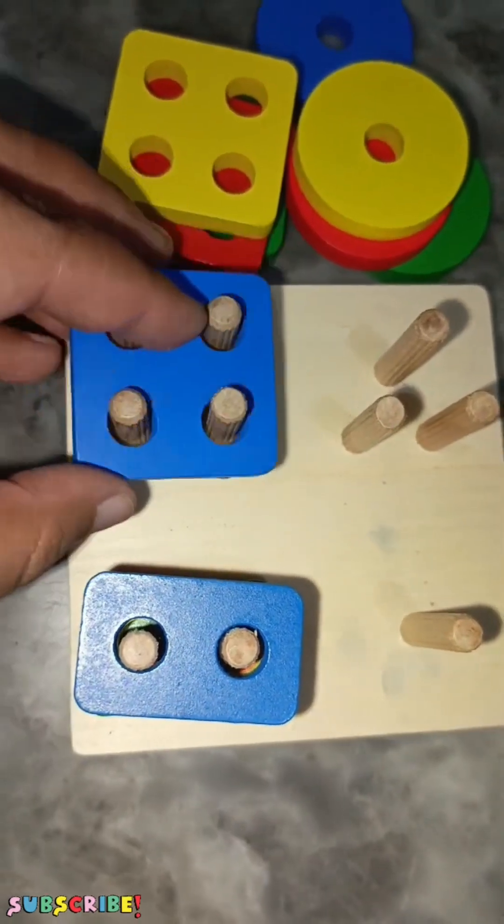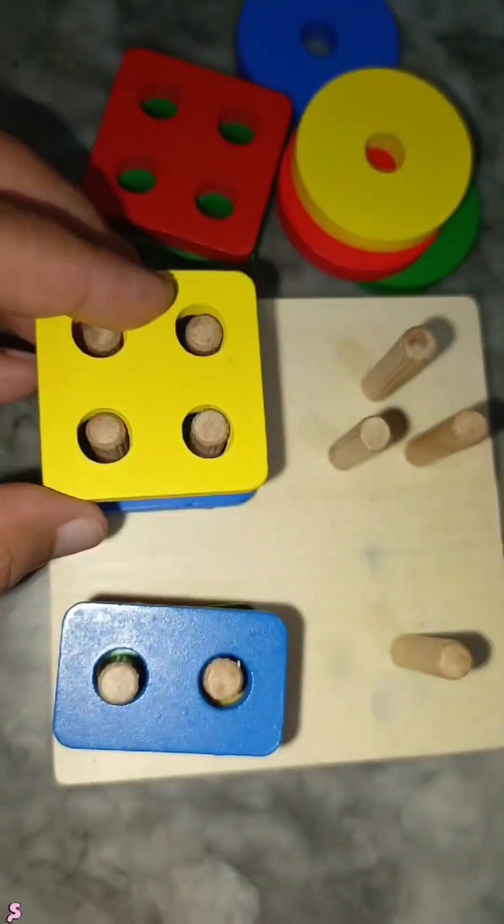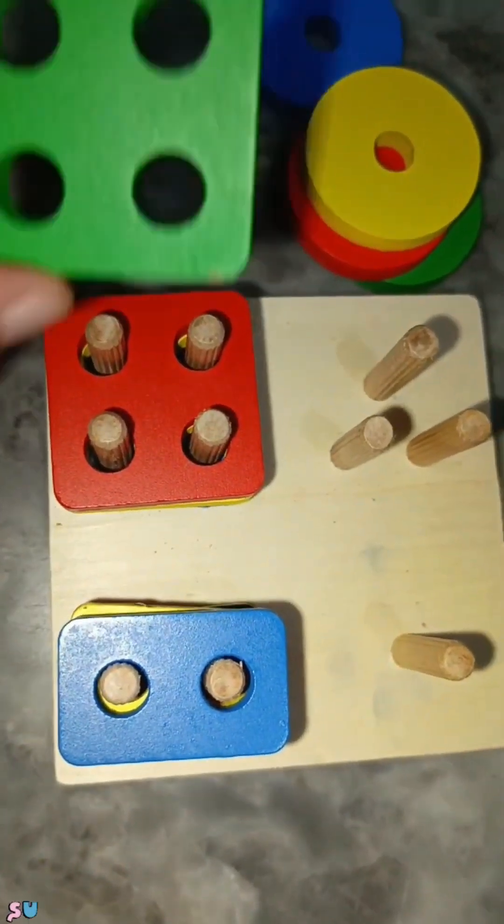Up square. Blue square. Yellow square. Red square. And green square.